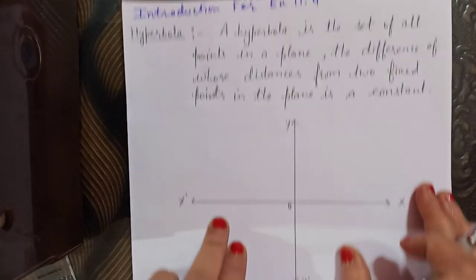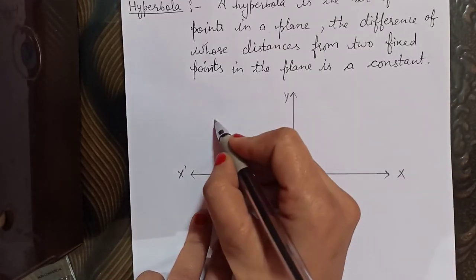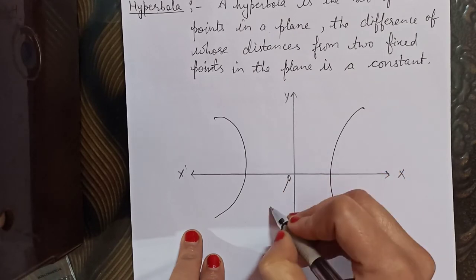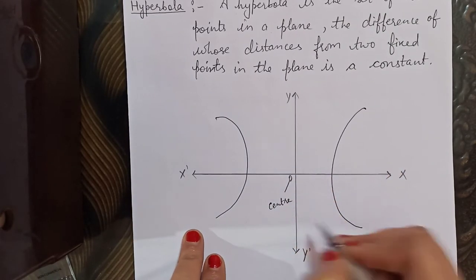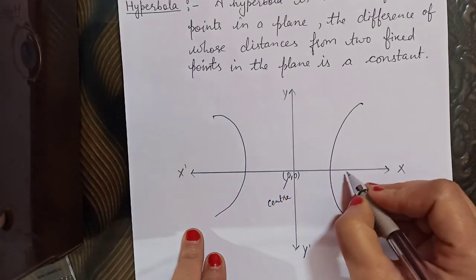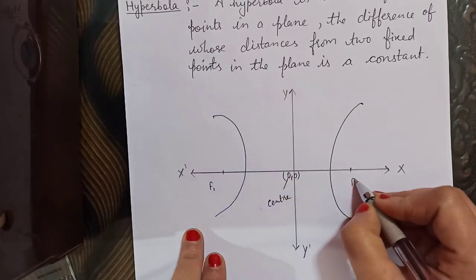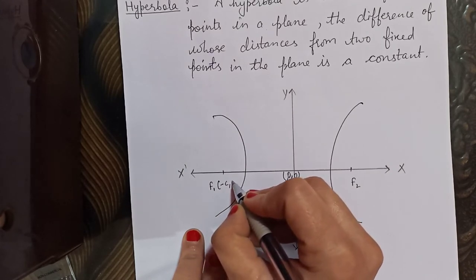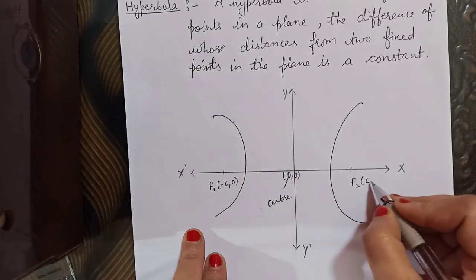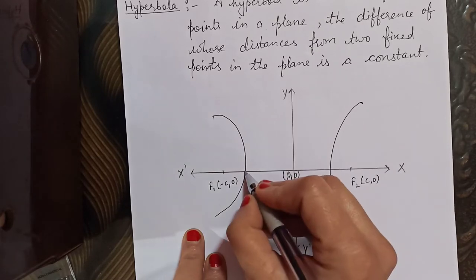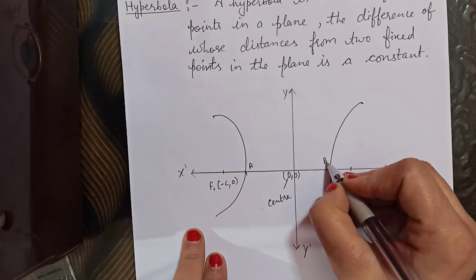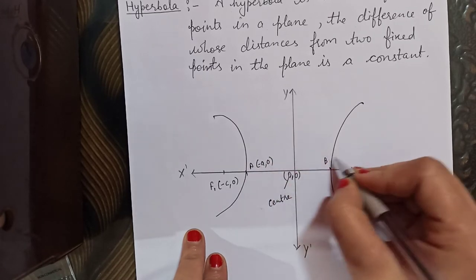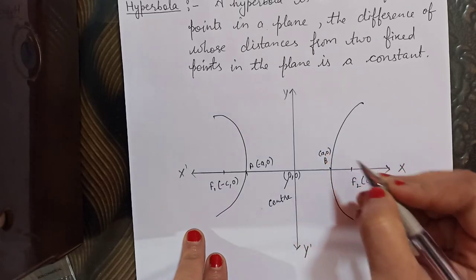Now let's look at the exact figure of the hyperbola. Here we have the hyperbola, and this point is its center. The coordinates of the center are (0, 0). The foci are F1 and F2 — these are the fixed points. Their coordinates on the x-axis are (c, 0) and (−c, 0), since one is on the negative side and one on the positive side.